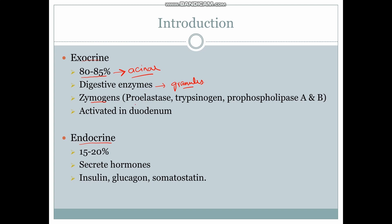These enzymes include proelastase, trypsinogen, and prophospholipase A and B. Since they are in an inactivated form, they are transported to the second part of the duodenum where they become activated. Proelastase becomes elastase, trypsinogen becomes trypsin, and prophospholipase becomes phospholipase A and B.